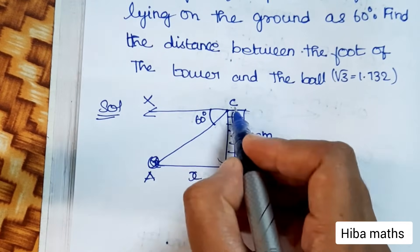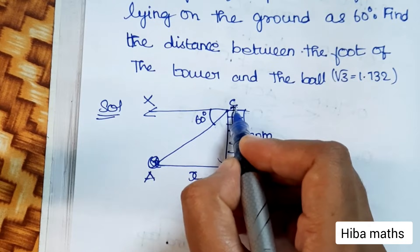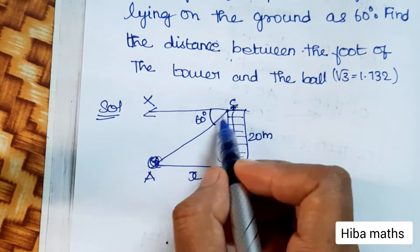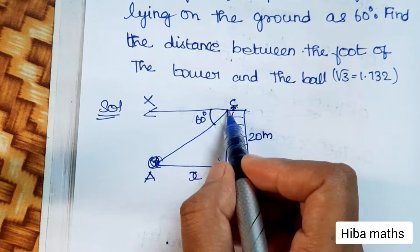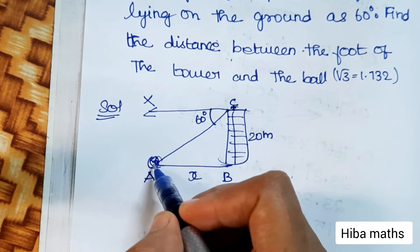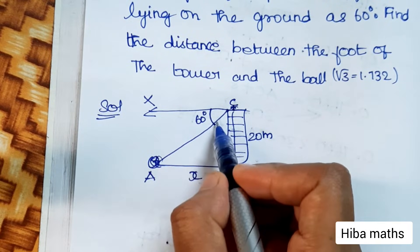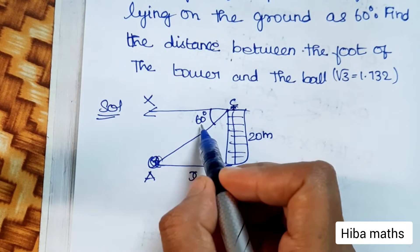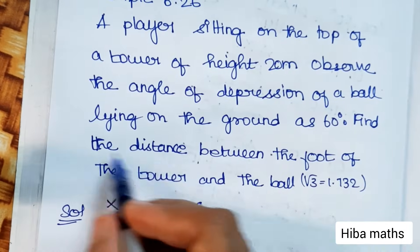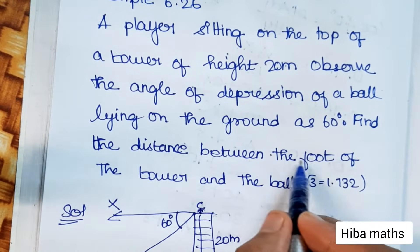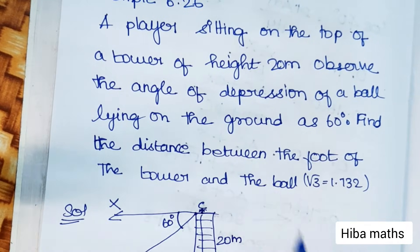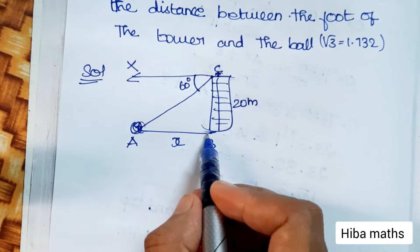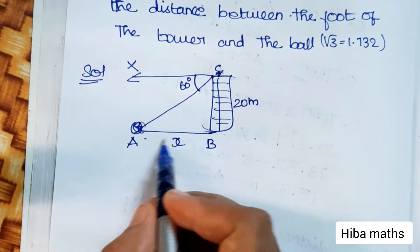There is a player on a tower, a player on the ground, and the ball is seen on the ground. The angle of depression is 60 degrees. Find the distance between the foot of the tower and the ball lying on the ground.